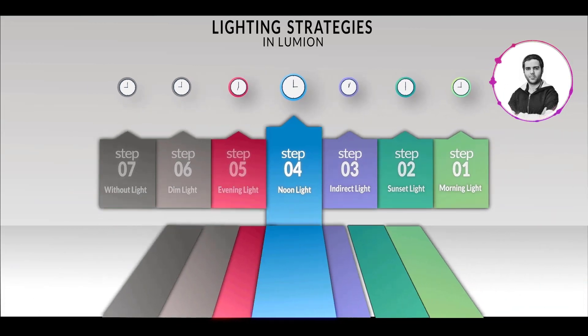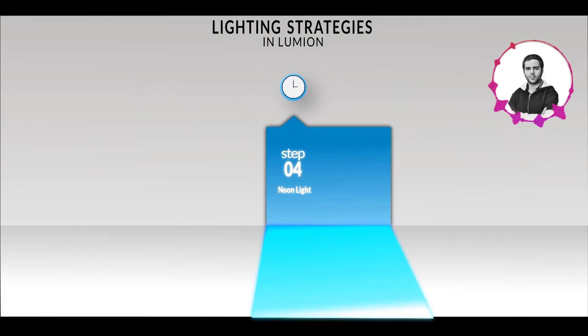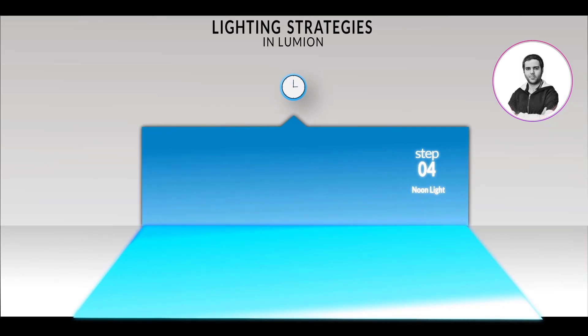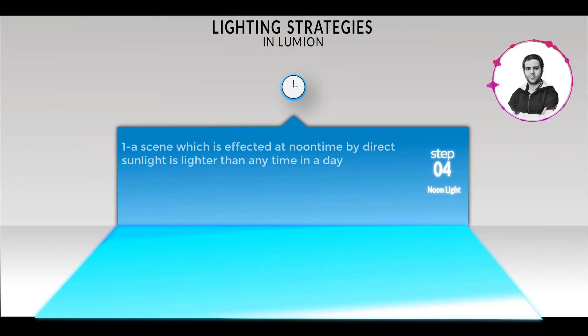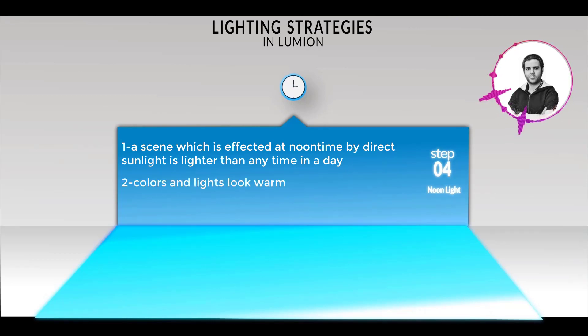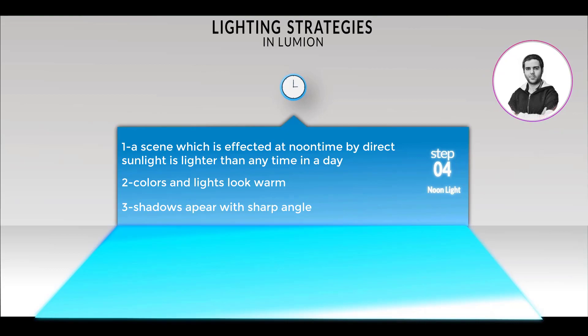This episode is about noon time sunlight. A scene which is affected at noon time by direct sunlight is lighter than any time in a day. Colors and lights look warm and shadows appear with sharp angles.